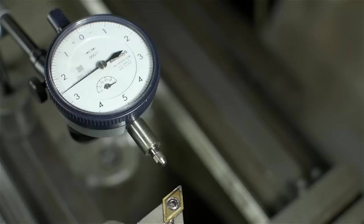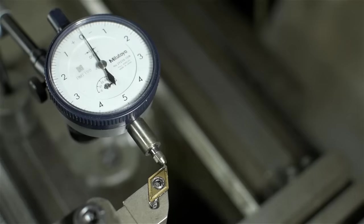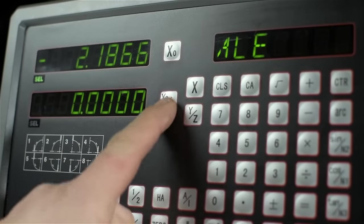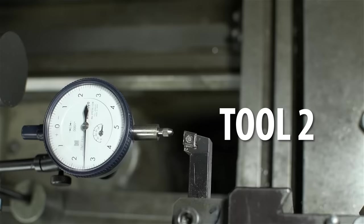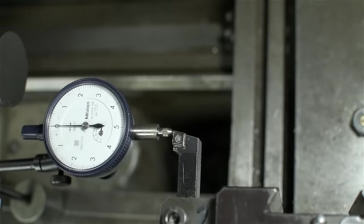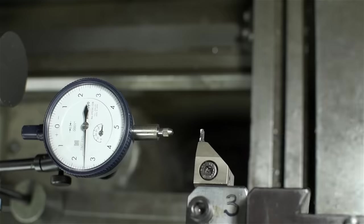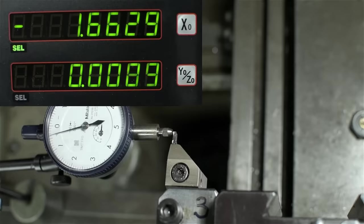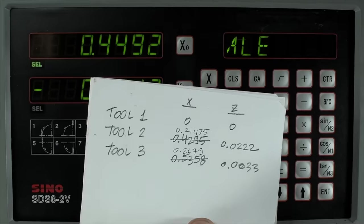Now, I'll do the same exact thing in Z. Go back to tool 1. Come in until we're on 0. This is a tenth indicator, so it's quite finicky. And then zero out the Z direction. Again, we're still in absolute. I'll write that number down. Switch to tool 3. Take the indicator to 0. Read the number on the DRO. Write it down in my little tool table. And there are our tool measurements.